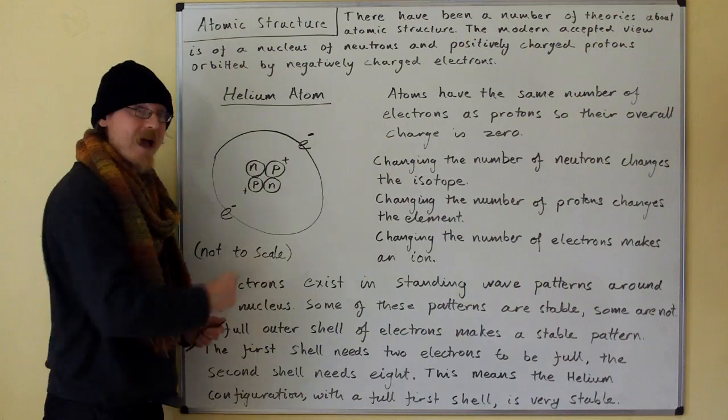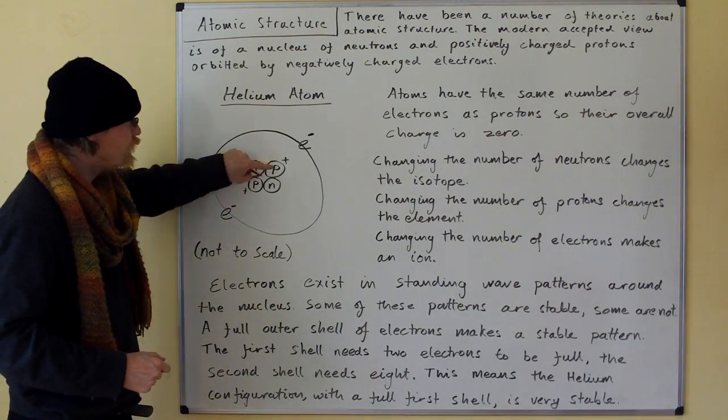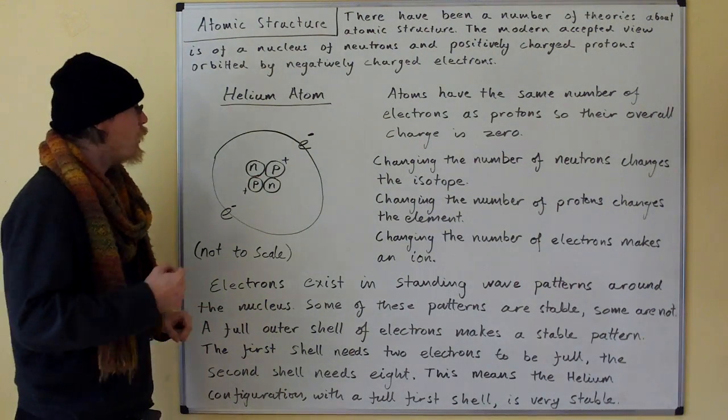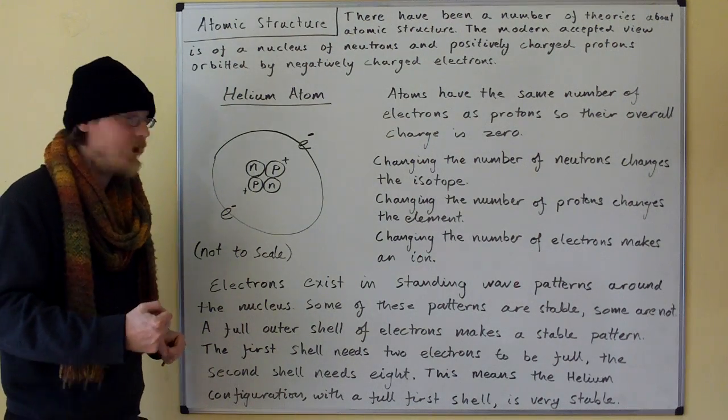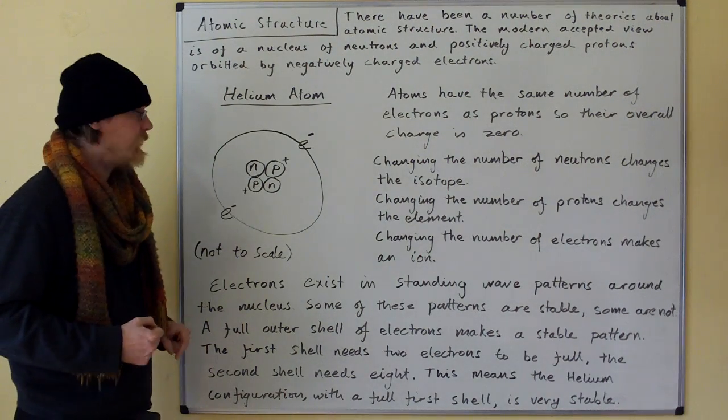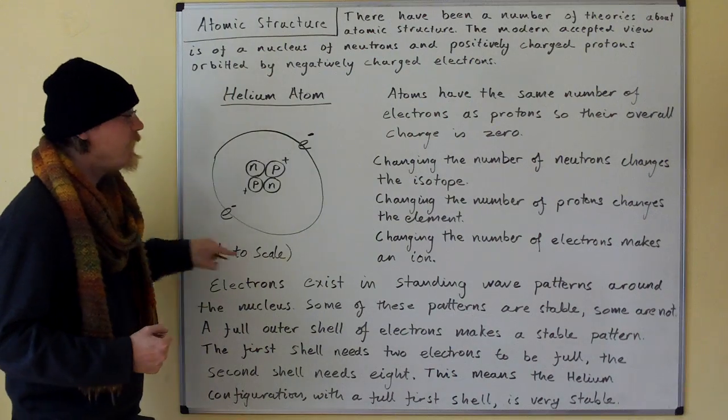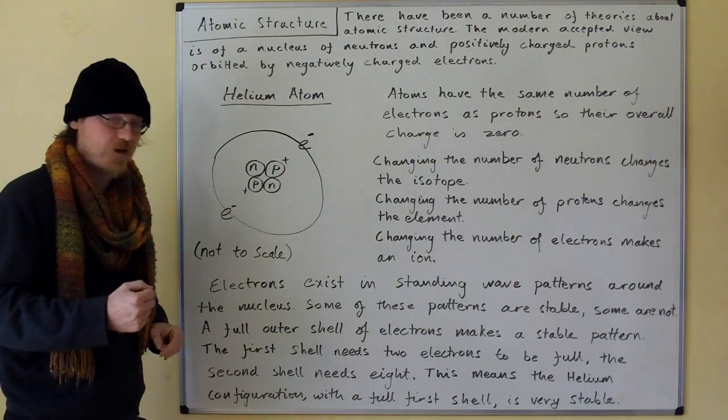So here's our helium atom. This is the nucleus. It's got two protons, positively charged, which is what makes it helium, and two neutrons in the nucleus, and these are orbited by two negatively charged electrons.